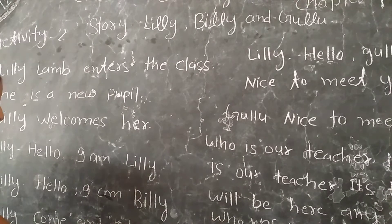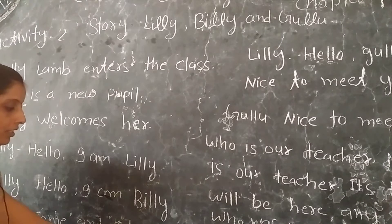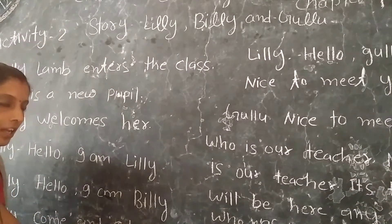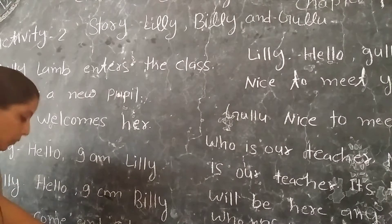Lili bolthi hai: 'Come and sit here.' Lili kya bolthi hai Lili ko? Come means aao, sit means bethna, here means yahan. Lili Lili ko bolthi hai: aao yahaan betho.